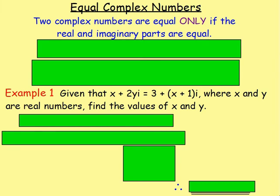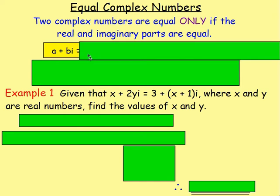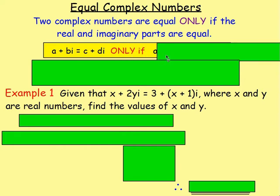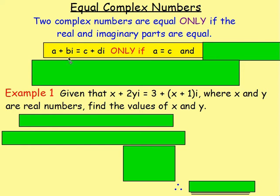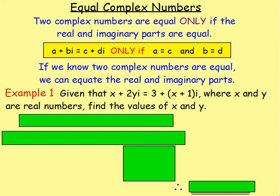Two complex numbers are equal only if the real parts and the imaginary parts are equal. So a + bi = c + di only if a = c and b = d. If you are told that two complex numbers are equal, you can equate the real and imaginary parts to solve problems.